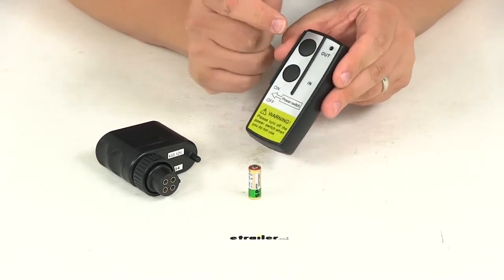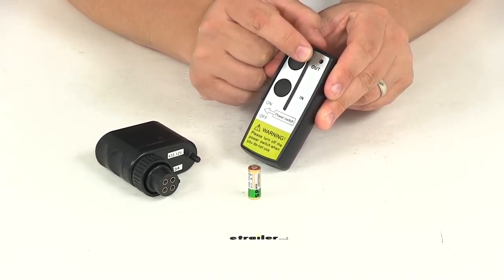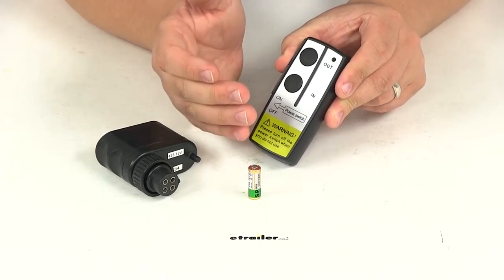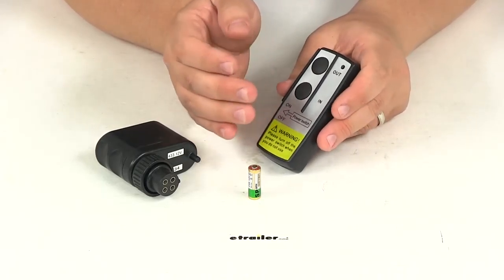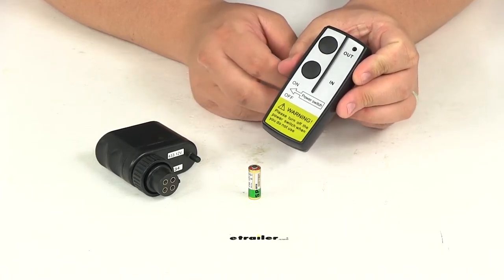On the remote side, remove the back panel and place in the included battery. Make sure your remote is on using the on and off switch here on the side.